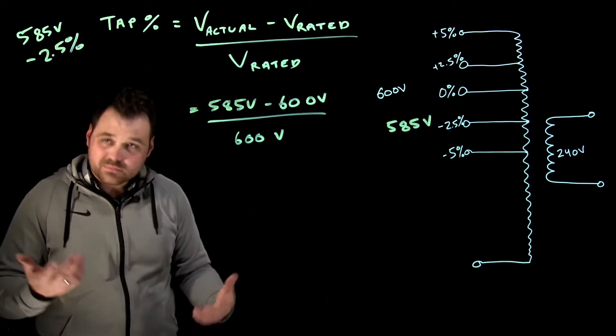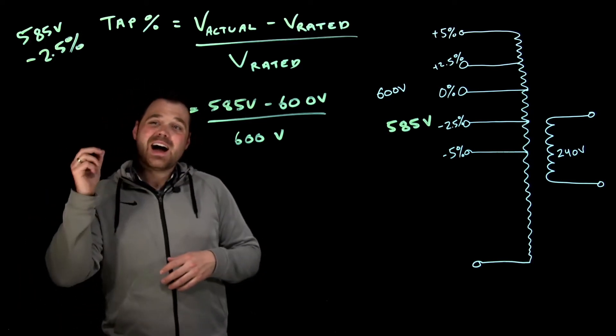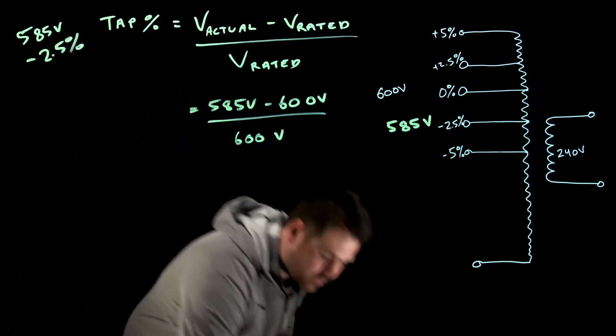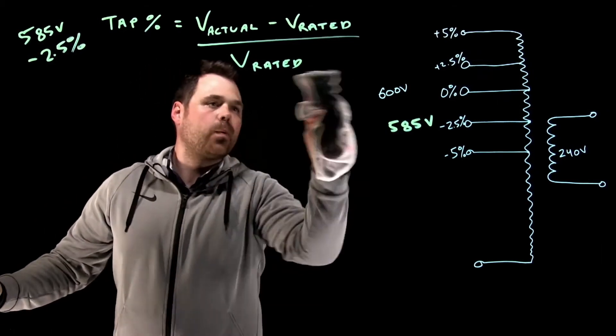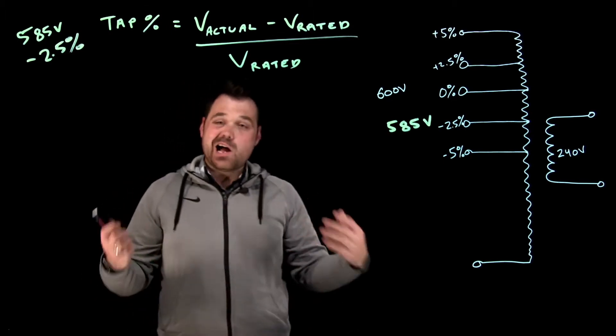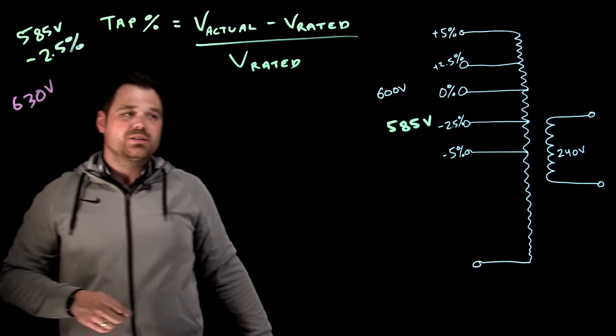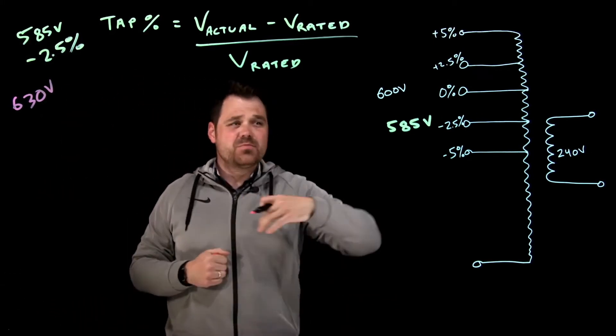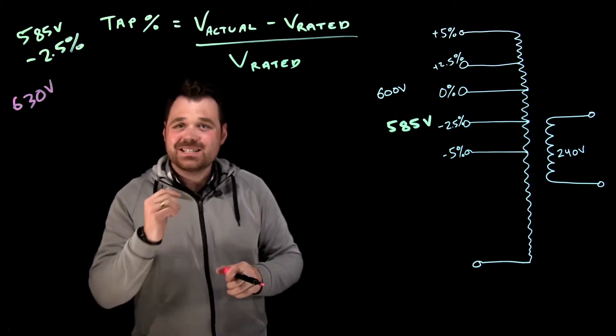So, well, that's great. That's all fine and dandy. But what if I had higher than rated voltage? Let's see if that formula works for that too. All right, so now we've got higher than rated voltage. Now let's say, oh man, we got 630 volts. We're close to the distribution transformer. We got 630 volts. Let's see if we can apply the same formula.